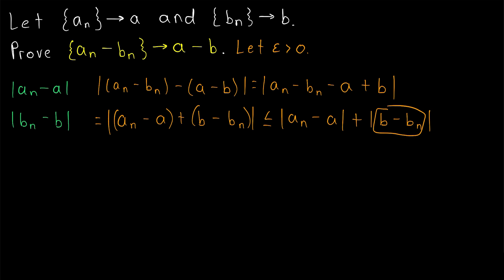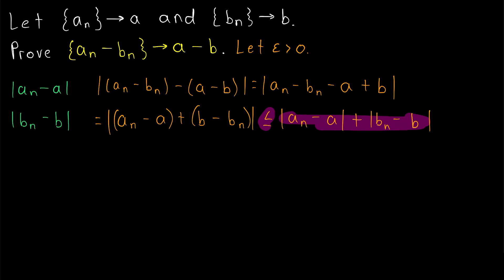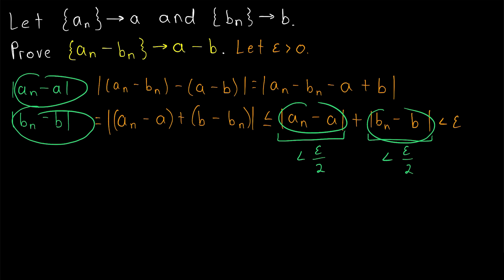Thankfully, the order of subtraction within absolute value bars doesn't matter, so we can flip those around so that it's bn minus b. That's because changing the order of subtraction only changes the sign, not the magnitude, and since this is in absolute value bars, it only measures the magnitude anyway. So we've got this expression that we want to show is less than epsilon. We know it's less than or equal to this sum, so we want to show that this sum is less than epsilon. In order to do that, we'll want both terms of this sum to be less than epsilon over 2, and that's no problem since we can make both terms arbitrarily small.